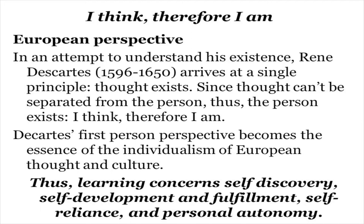Let's look at two different perspectives — the European perspective and the African perspective on people. The European perspective, based on Descartes, says that since people think, they must exist: 'I think, therefore I am.' Descartes' first-person perspective becomes the essence of individualism in European thought and culture. Thus, learning from this point of view concerns self-discovery, self-development, self-fulfillment, self-reliance, and personal autonomy. This Cartesian philosophy is the basis of democratic education.